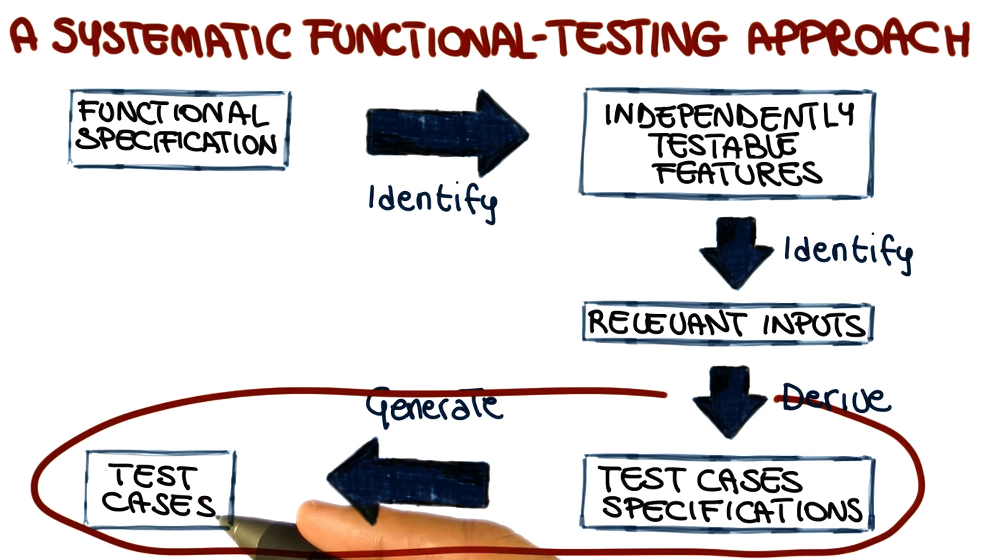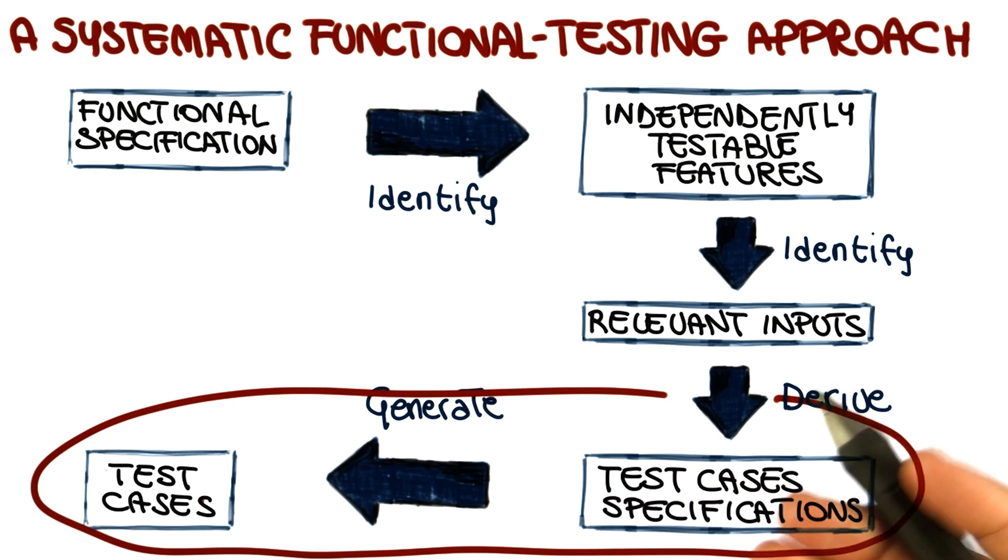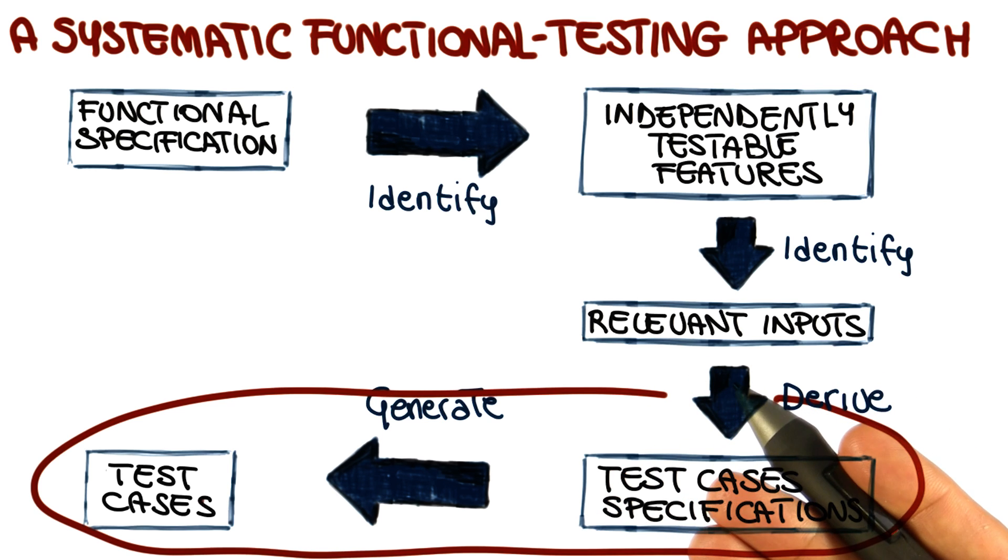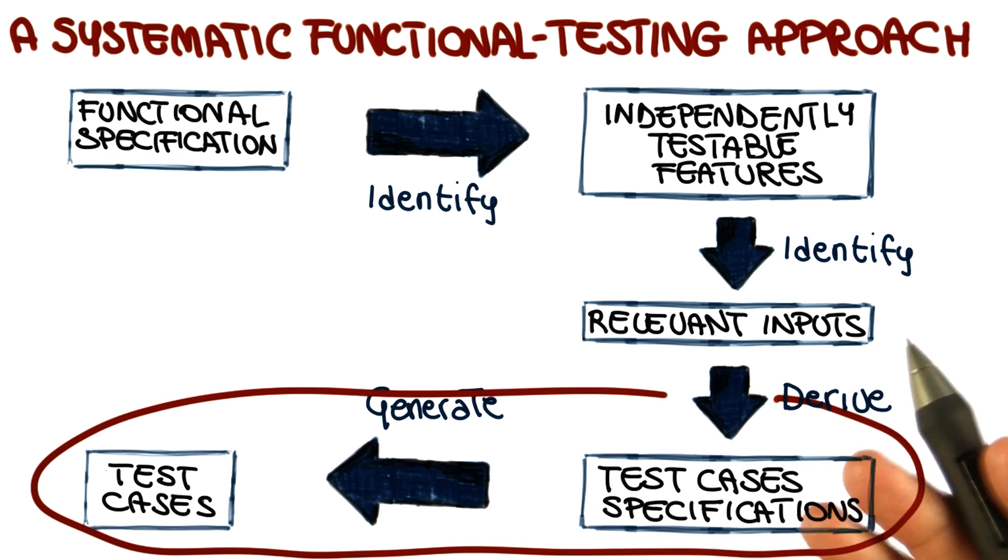And this is normally a fairly mechanical step in the sense that we just have to instantiate what is in the test case specification as actual test cases. And it's really dependent on the specific type of partitions and values identifying on the specific context. So instead of looking at that here in the abstract, I'm going to show you with an example later on in the lesson.